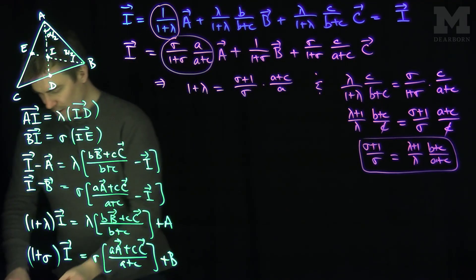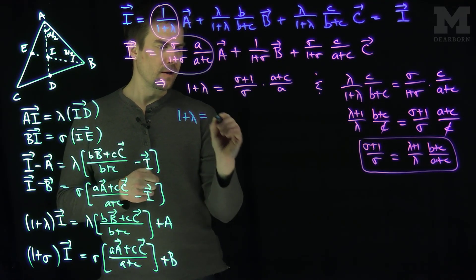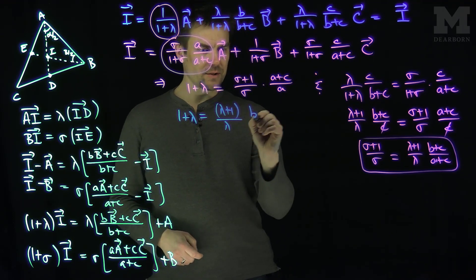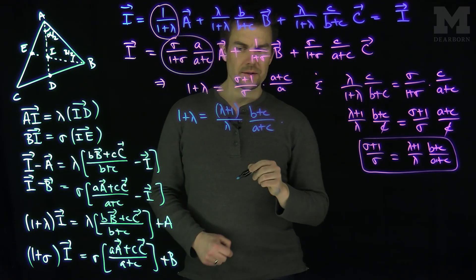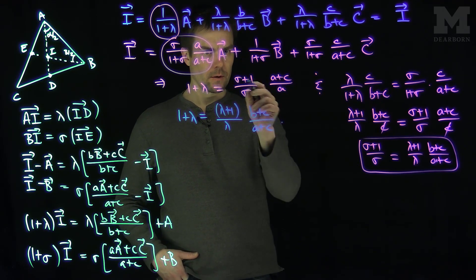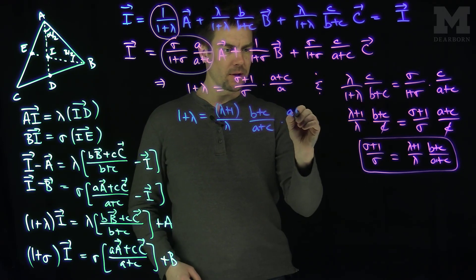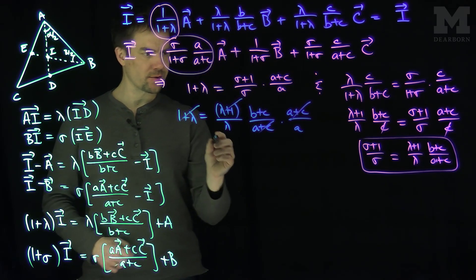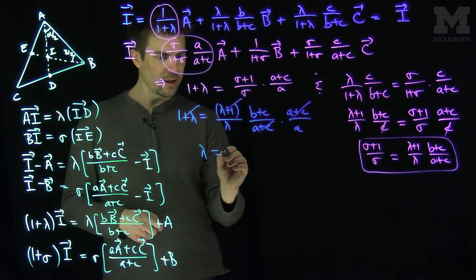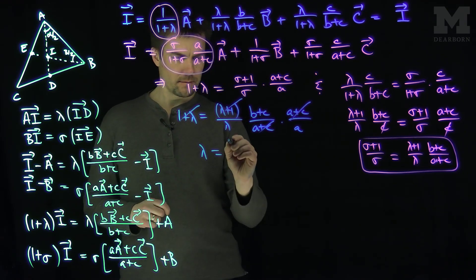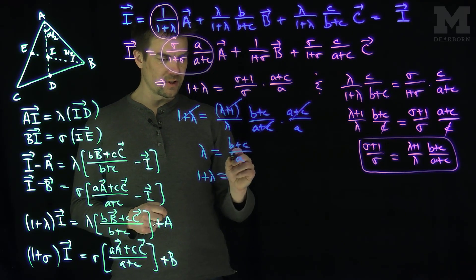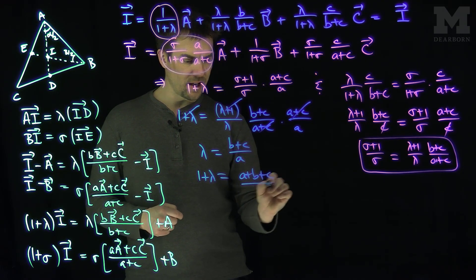Substituting (sigma+1)/sigma into our first equation, 1+lambda equals [(lambda+1)/lambda]·[(b+c)/(a+c)]·[(a+c)/a]. The (a+c)'s cancel and the (lambda+1)'s cancel, giving us 1/lambda = (b+c)/a, and therefore lambda = (b+c)/a. So one plus lambda is equal to (a+b+c)/a.